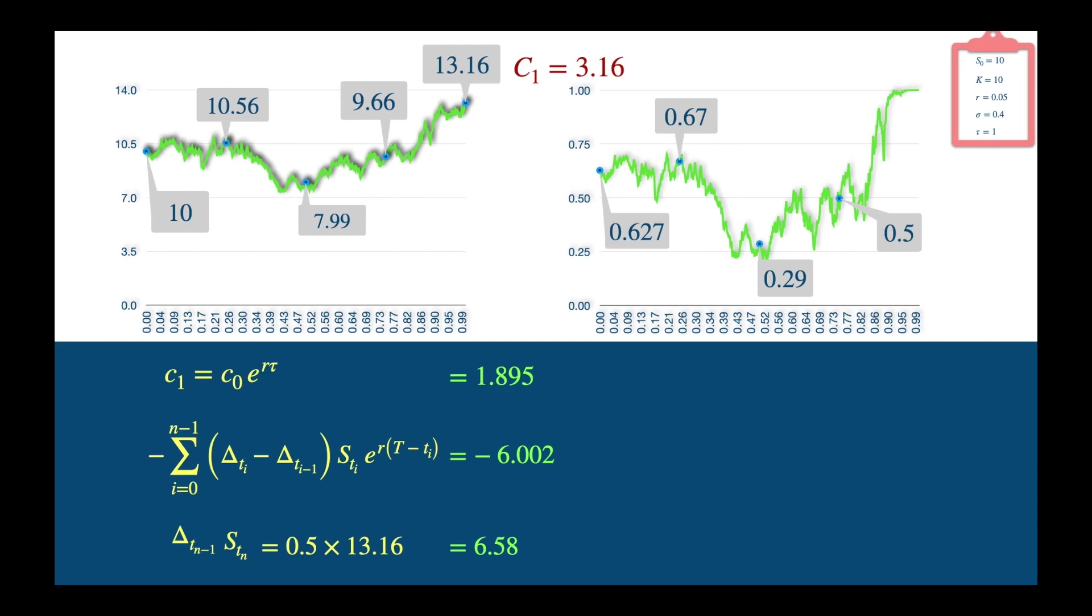And now let's insert an additional observation between any two observation points. Let's label the stock price at the new observation points. And let's label the delta as well. The premium amount hasn't changed, because the same option with the same strike and the same maturity.